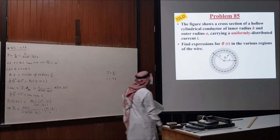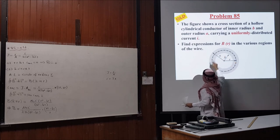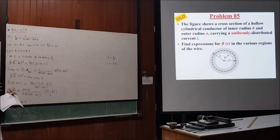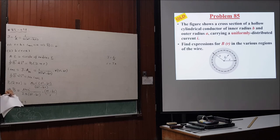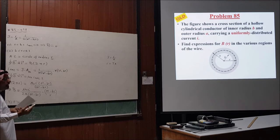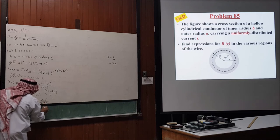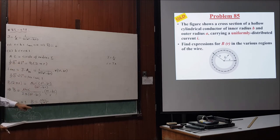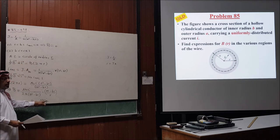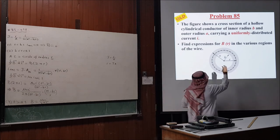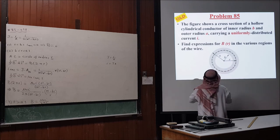For r > A, you are outside the tube and see only the total current I, giving B = μ₀I / (2πr). In the next problem, we will add another wire inside, creating a coaxial cable configuration.